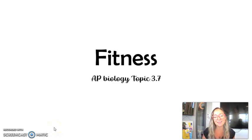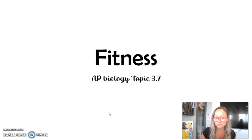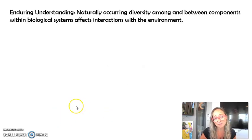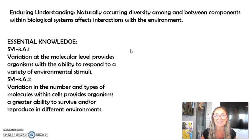In my personal opinion, I think it's a little odd to have this topic of fitness at the end of Unit 3 in AP Bio. I feel like this would be more appropriate in Unit 7 after we've discussed fitness and natural selection. But let's go ahead and see what College Board says we should know about this topic. It says: naturally occurring diversity among and between components within biological systems affects interactions with the environment. I feel like that is a very broad statement, so when we look at some examples, we're going to focus on two of them.